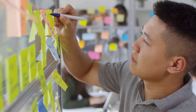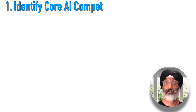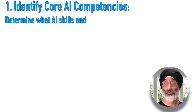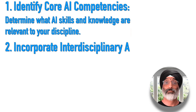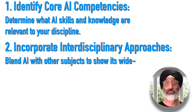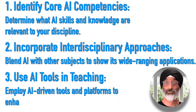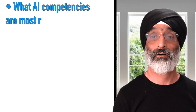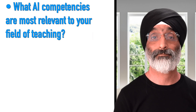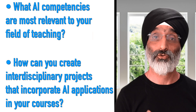When designing AI-integrated courses, consider the following steps. First, identify core AI competencies — determine what AI skills and knowledge are relevant to your discipline. Second, incorporate interdisciplinary approaches by blending AI with other subjects to show its wide-ranging applications. Third, use AI-driven tools and platforms to enhance the learning experience. Here are some questions to consider: What AI competencies are most relevant to your field of teaching? How can you create interdisciplinary projects that incorporate AI applications in your courses?